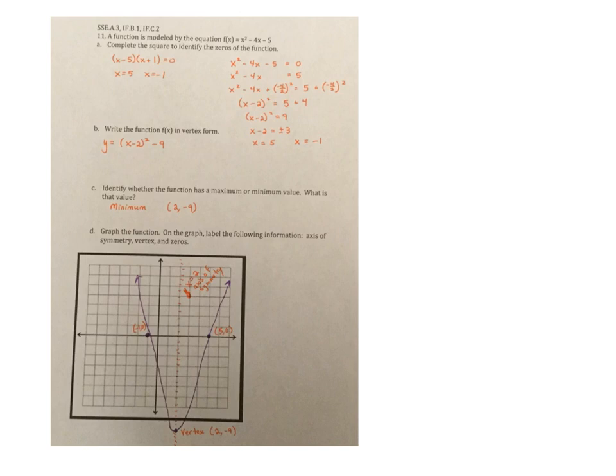Cause again, remember you're identifying the zeros, which is the X intercepts. So I ran it through completing the square. All right. Then it says, write the function in vertex form. Well, that's the point of running it through completing the square is because this step right here, once you move that nine to the other side is your vertex form.